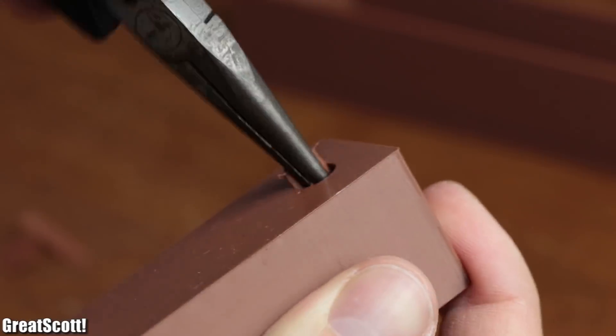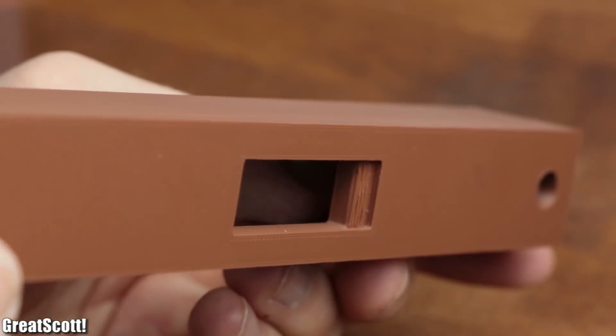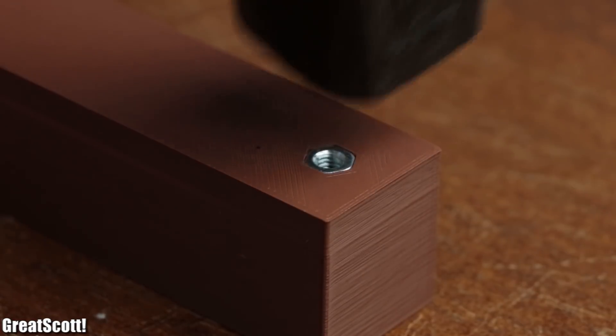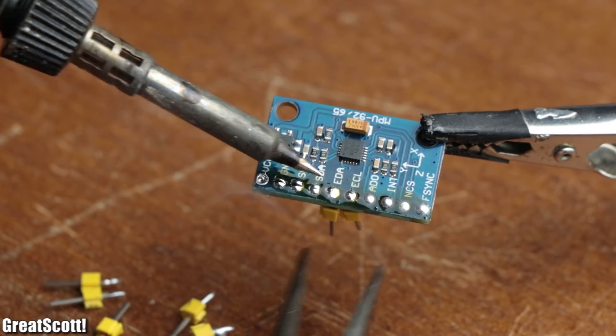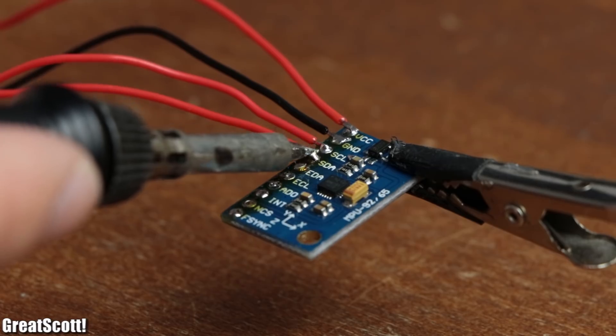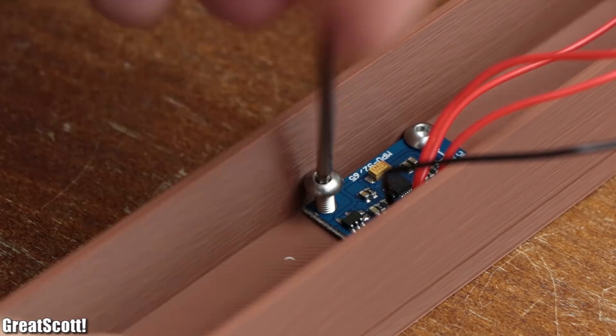Once that was done, I removed the support material, determined that the prints were not half bad, and thus placed the M3 and M4 nuts into their designated indentations. Then I removed the male headers from the accelerometer IC and instead added wires to the board and secured it to the bottom part of the 3D print with M3 bolts.